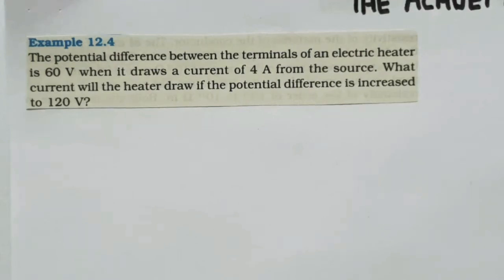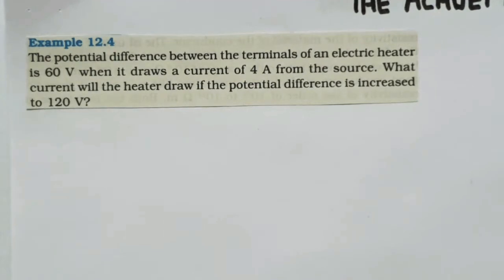Problem 12.4: The potential difference between the terminals of an electric heater is 60 volts when it draws a current of 4 amperes from the source. What current will the heater draw if the potential difference is increased to 120 volts?